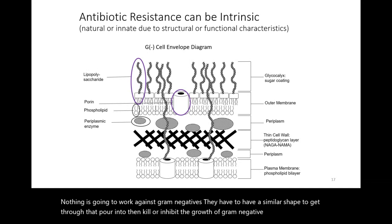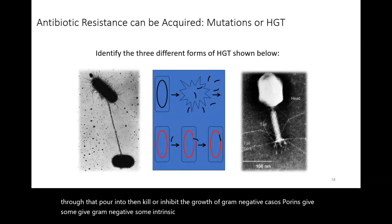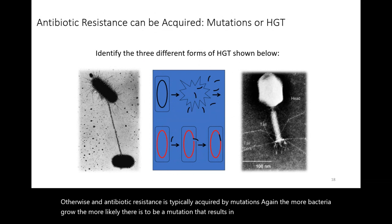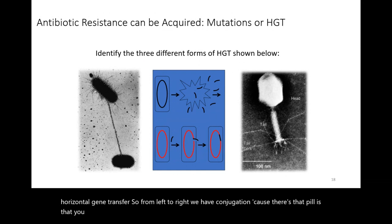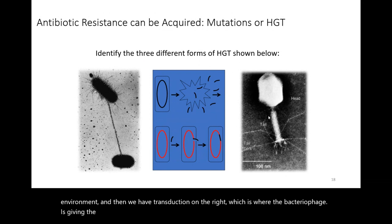Otherwise, antibiotic resistance is typically acquired through mutations — the more bacteria grow, the more likely a mutation conferring resistance will arise — or through horizontal gene transfer. From left to right: conjugation (via the pilus), transformation (bacteria taking up DNA from the environment), and transduction (a bacteriophage transferring bacterial DNA to the host cell).